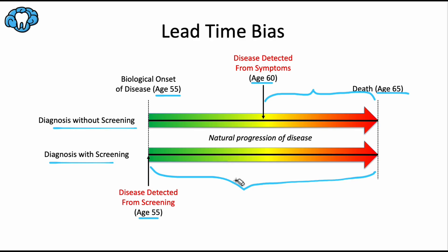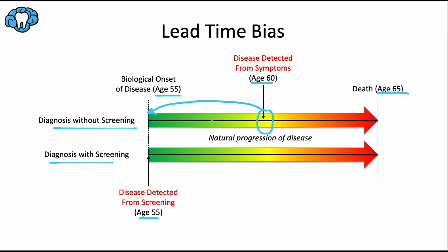So how do we reduce lead time bias? We adjust survival rates depending on the severity of the disease at the time of diagnosis. For example, if we detect the disease when symptoms appear and the patient is already at a certain stage of natural disease progression, we can estimate how long they've probably already been living with the condition and adjust for that period based on the severity of disease at the time of diagnosis.